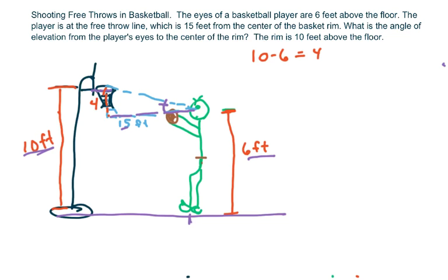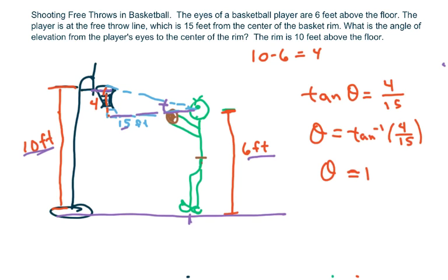To find the angle of elevation, we have opposite over adjacent. So tan θ = 4/15, therefore θ = tan⁻¹(4/15), so our angle is approximately 14.9 degrees.